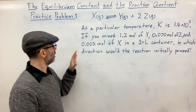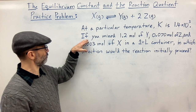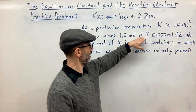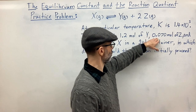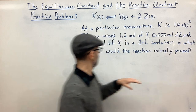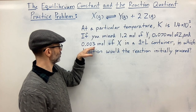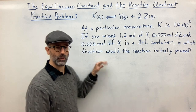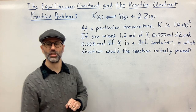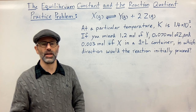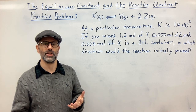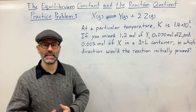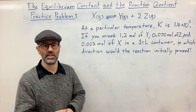We're going to use that K value to determine if our reaction is at equilibrium. They're giving us a mixture: 1.2 moles of Y, 0.070 moles of Z, and 0.003 moles of X in a one-liter container. In which direction is the reaction going to initially proceed — shift left or shift right?